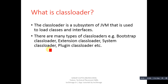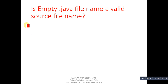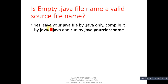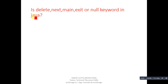Next question: is an empty dot-java file name a valid source file name? Yes — save your Java file as '.java' only, compile it with 'javac .java', and run it using your class name. You can save your program with only the '.java' extension, but your bytecode will be created with the name of the class available in the source code.